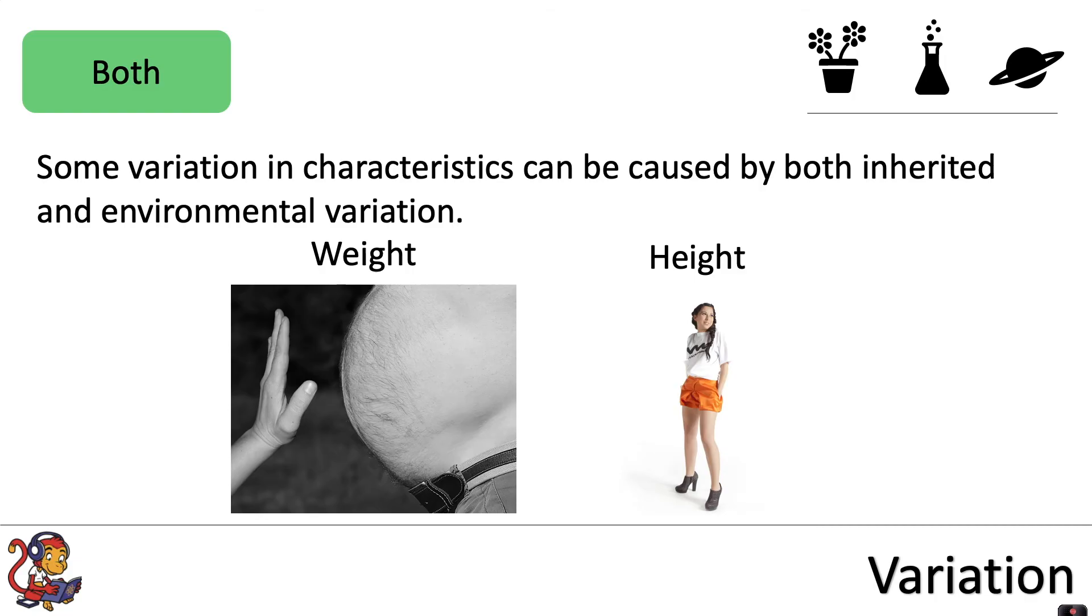These will determine a particular weight or height that you could be. However, environmental variation also plays a factor, and for example, if you're eating an unhealthy, unbalanced diet, you may become overweight. So you've got both inherited and environmental variation determining your weight.